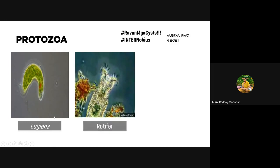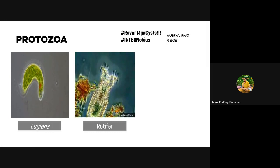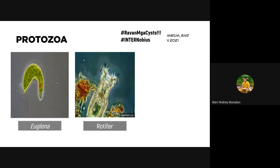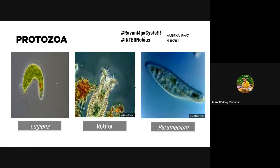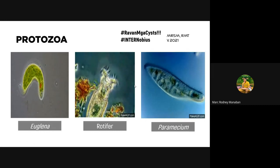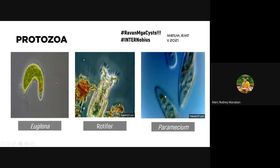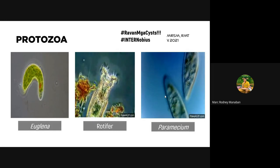You also have the rotifer, which has ciliated tufts at the top resembling a wheel — in Latin, 'rotifer' means wheel-bearer. And lastly, the most commonly observed protozoan is your paramecium, a type of ciliate with cilia along its sides for locomotion.